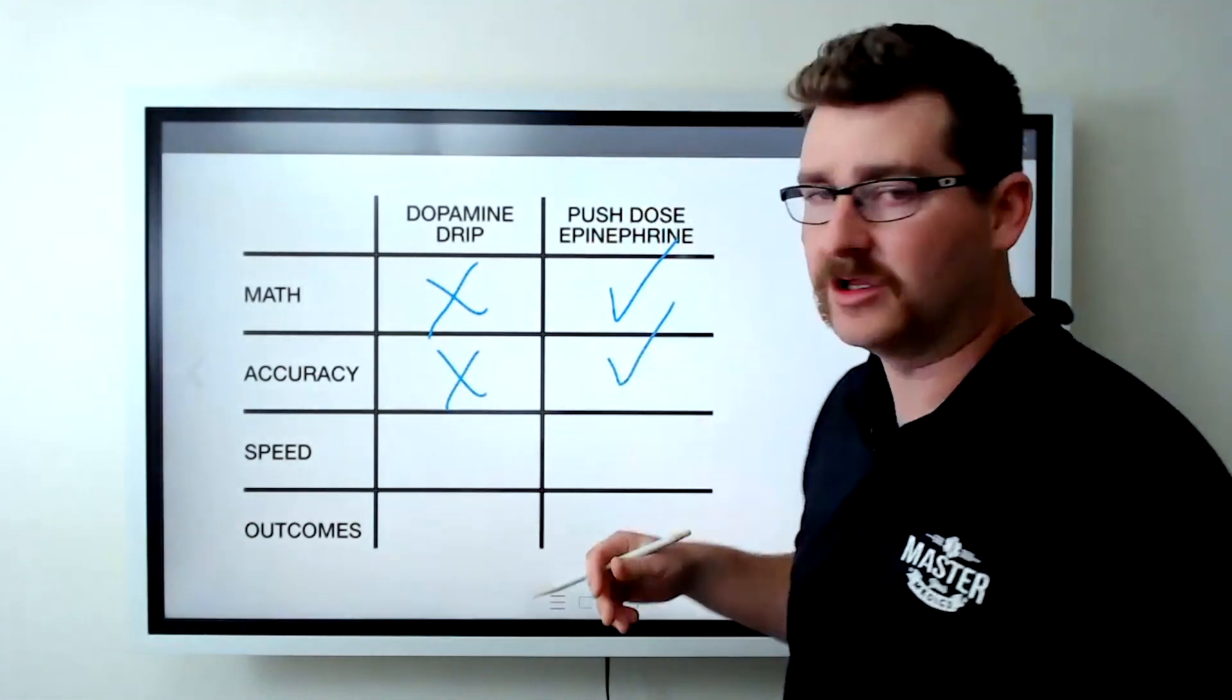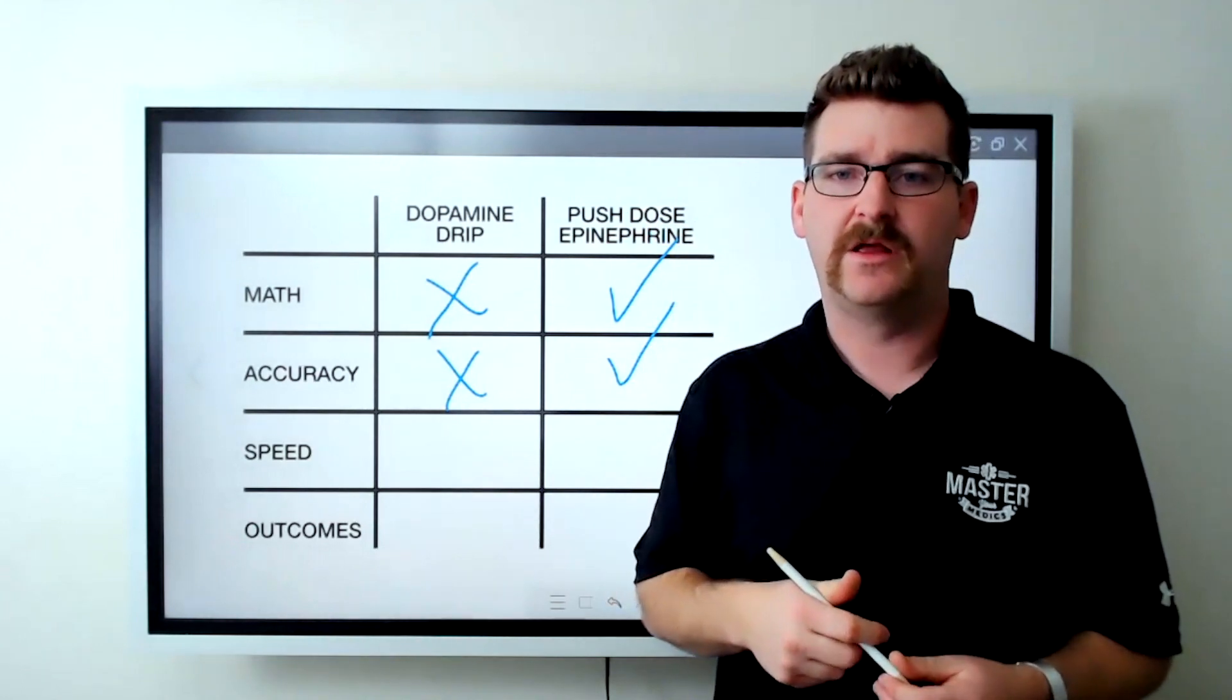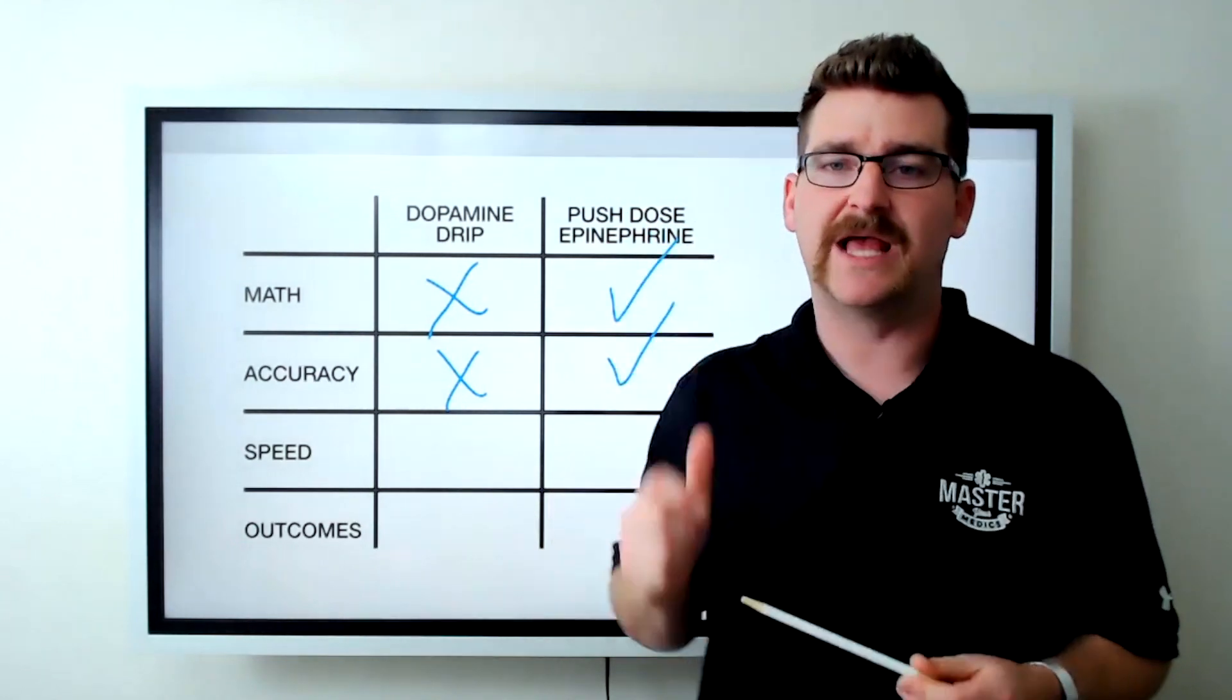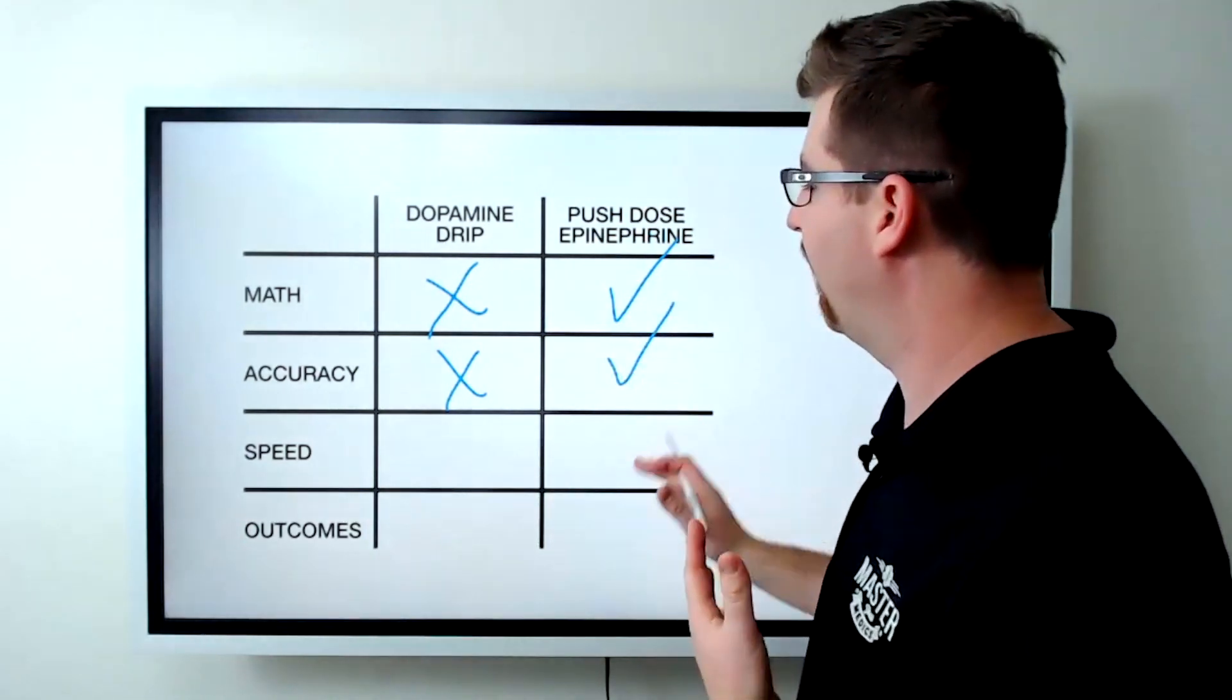Whereas giving small little aliquots of epinephrine, very accurate. And with that syringe, we can see exactly how much we're getting. So much more accurate.